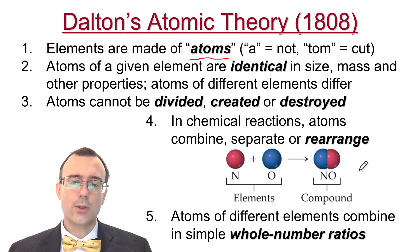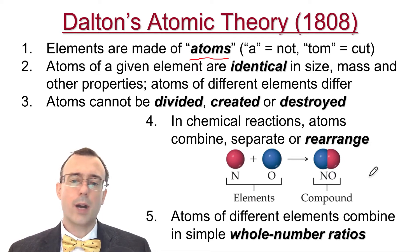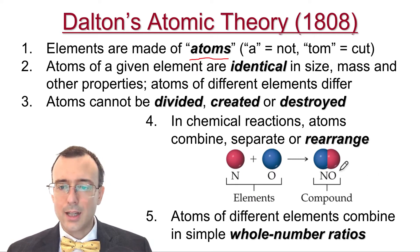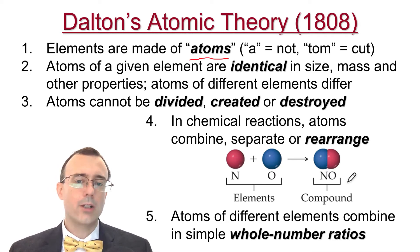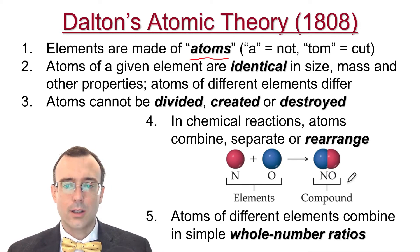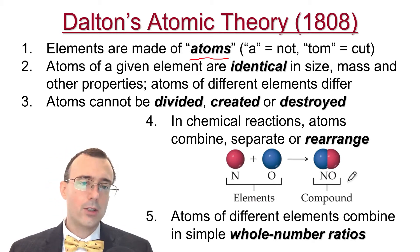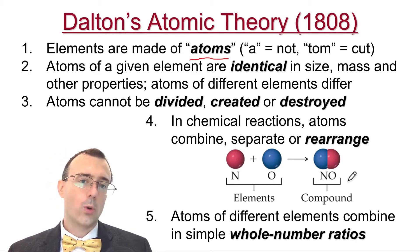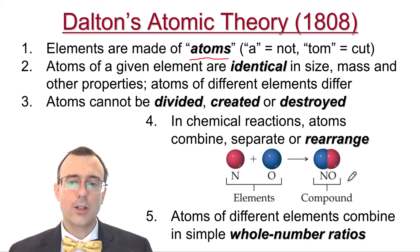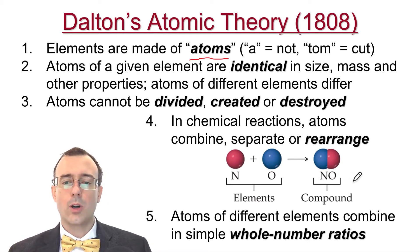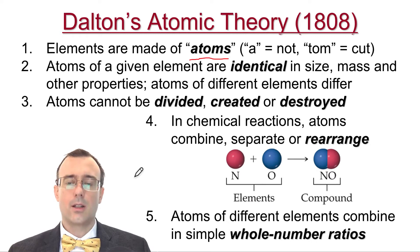He also said that atoms of different elements are going to combine in simple whole number ratios. For NO, that's a one-to-one ratio of nitrogen and oxygen. You can also have a one-to-two ratio, one-to-three ratio, two-to-three ratio, four-to-one ratio, or three-to-four ratio — some kind of simple whole number ratio of the different atoms in the molecule.